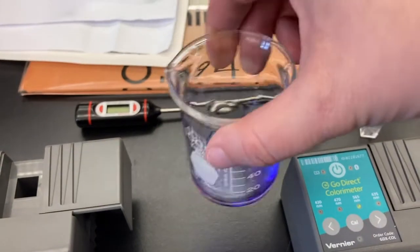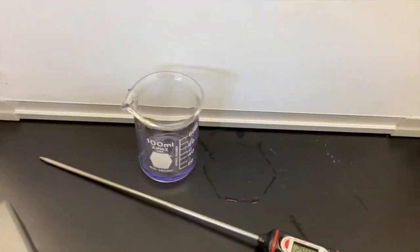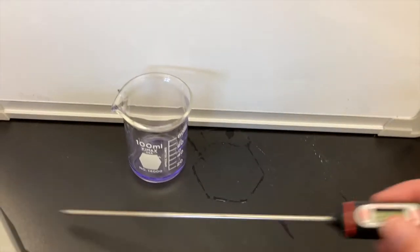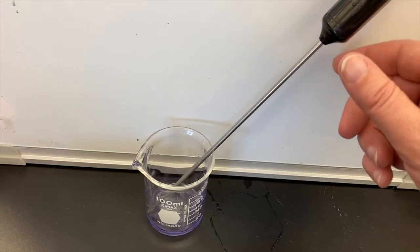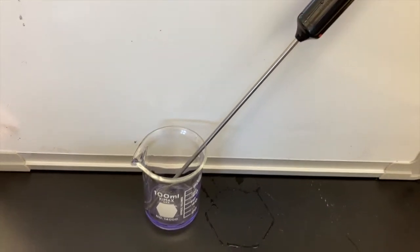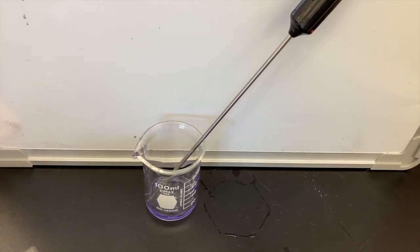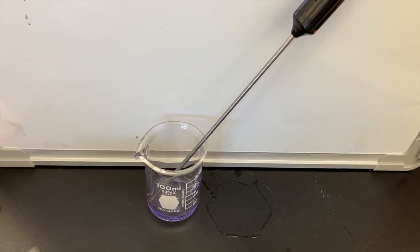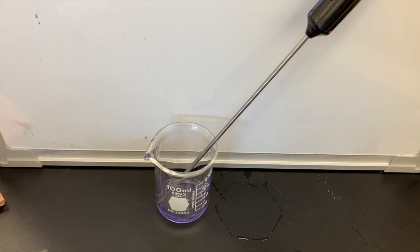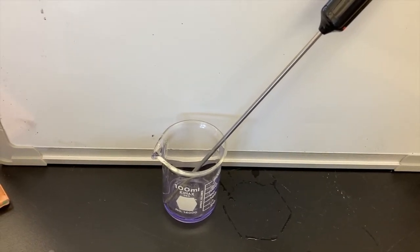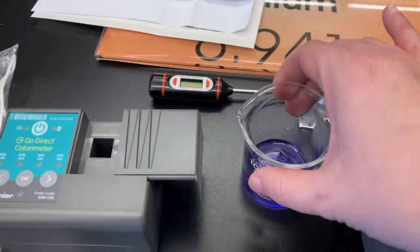Once you mix your reactants together you want to swirl them around, make sure they react for a few seconds. Before you get started on your data collection, make sure to take the temperature of your mixture so that we have a comparison for the colder temperature data. You are going to want to leave that in there at least 20 seconds so that it can calibrate and get to the right temperature. It should be pretty close for the room temperature one, it will take longer to calibrate for the cold temperature one. And then you can transfer some of your mixture into the cuvette.